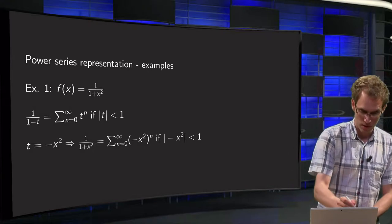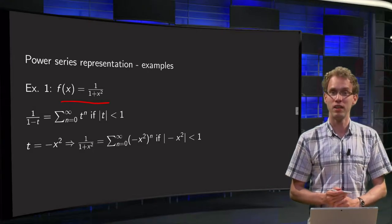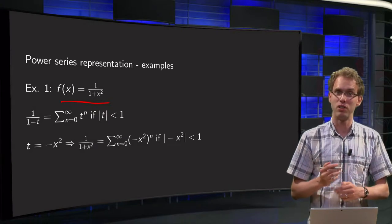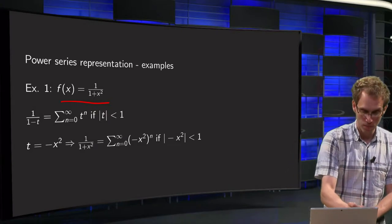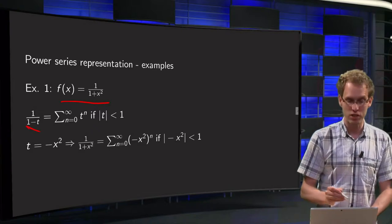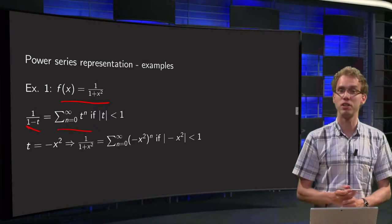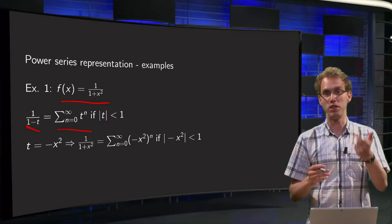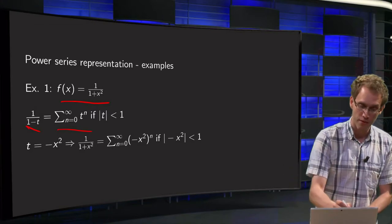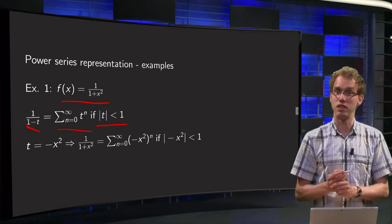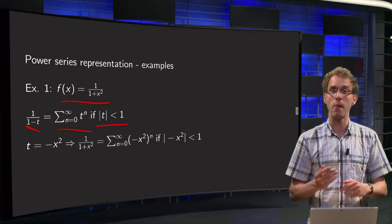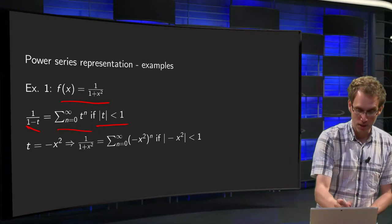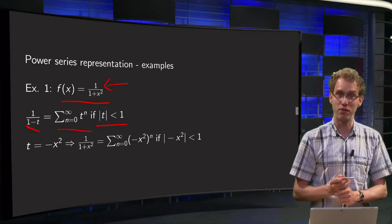First example: f of x equals 1 over 1 plus x squared. We want to find the power series representation for that function. Fortunately, we know the geometric series: 1 over 1 minus t equals the sum from n equals 0 to infinity of t to the power n, so 1 over 1 minus t equals 1 plus t plus t squared, etc. This geometric series converges if the absolute value of t is smaller than 1. And we can use this known power series to find the power series representation for f of x.